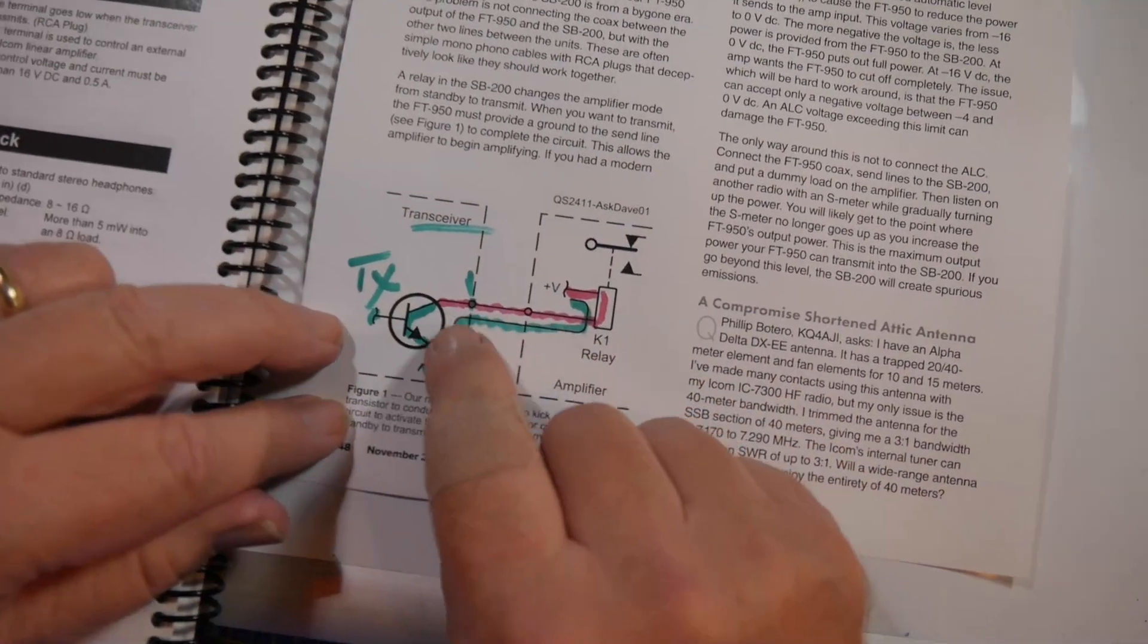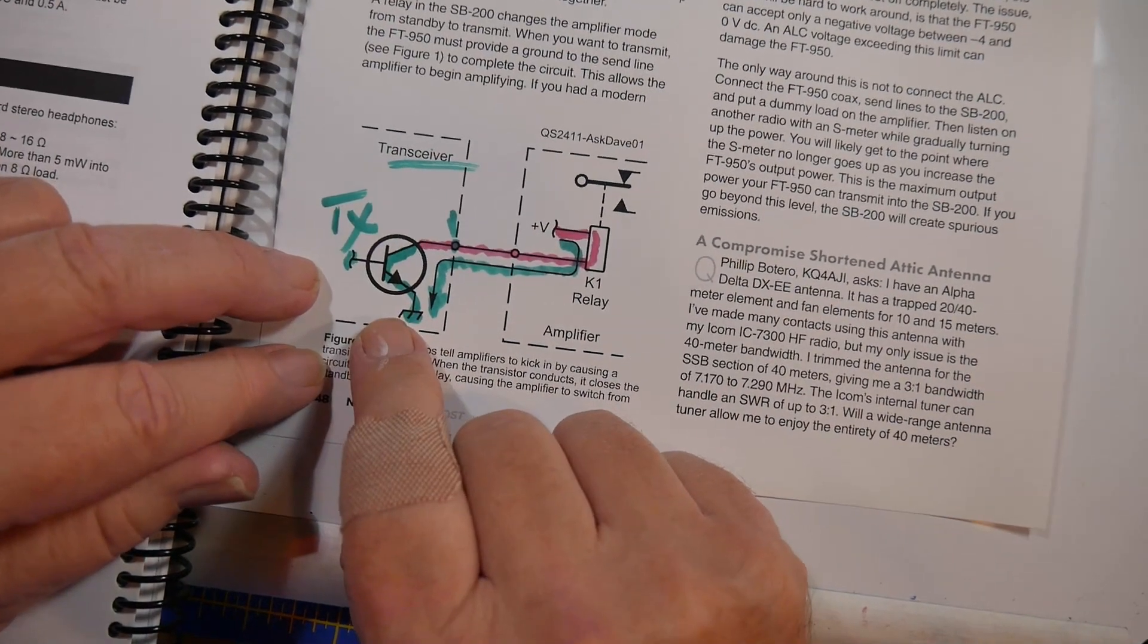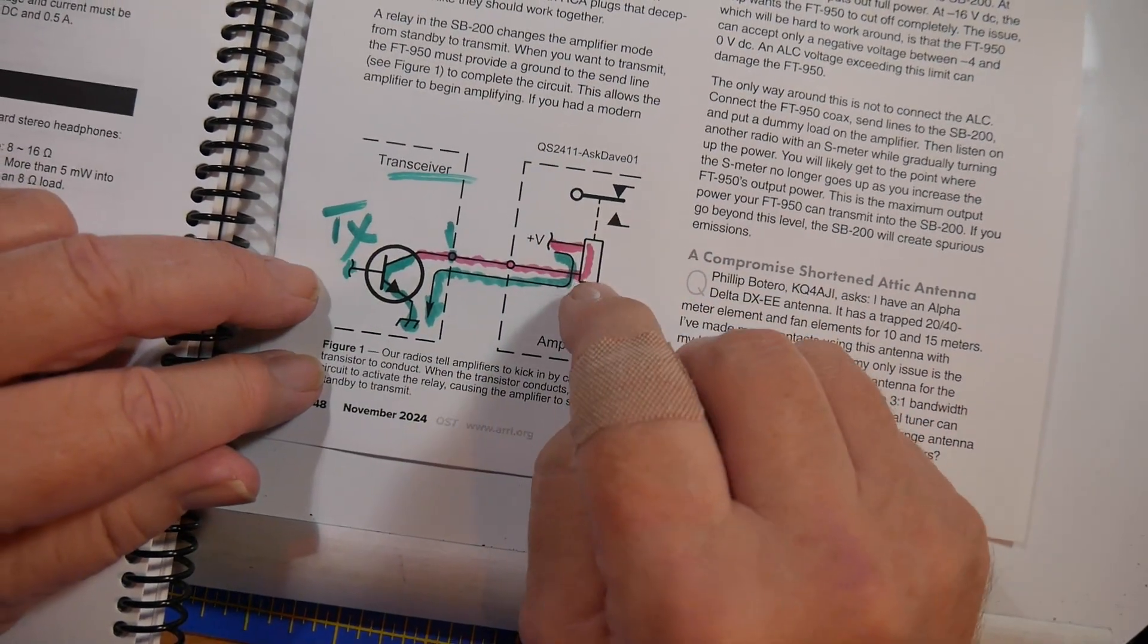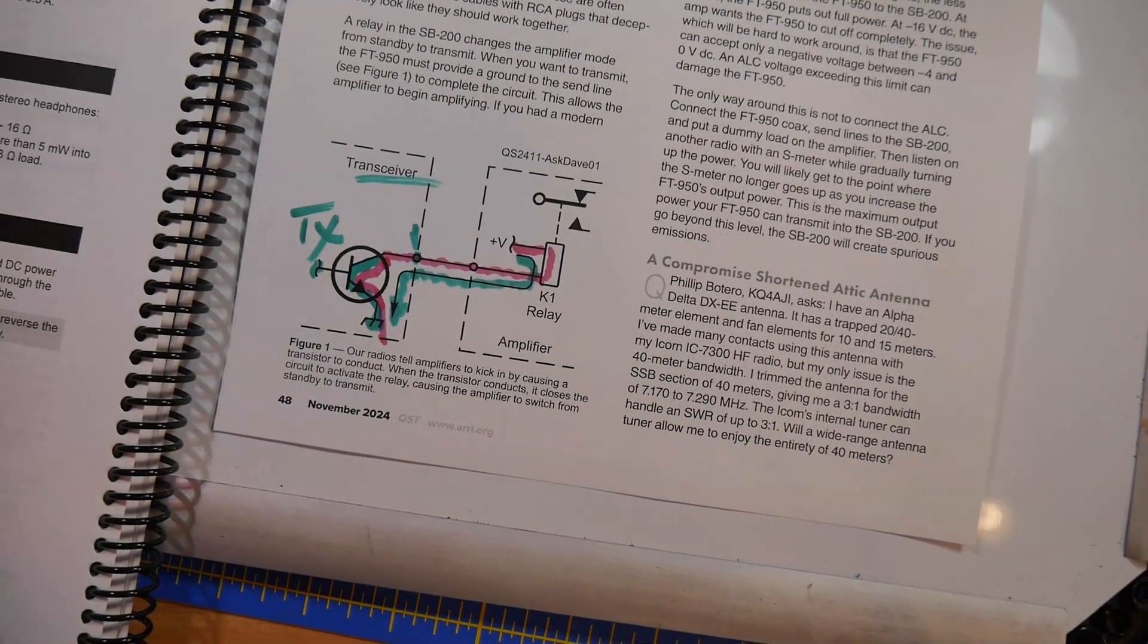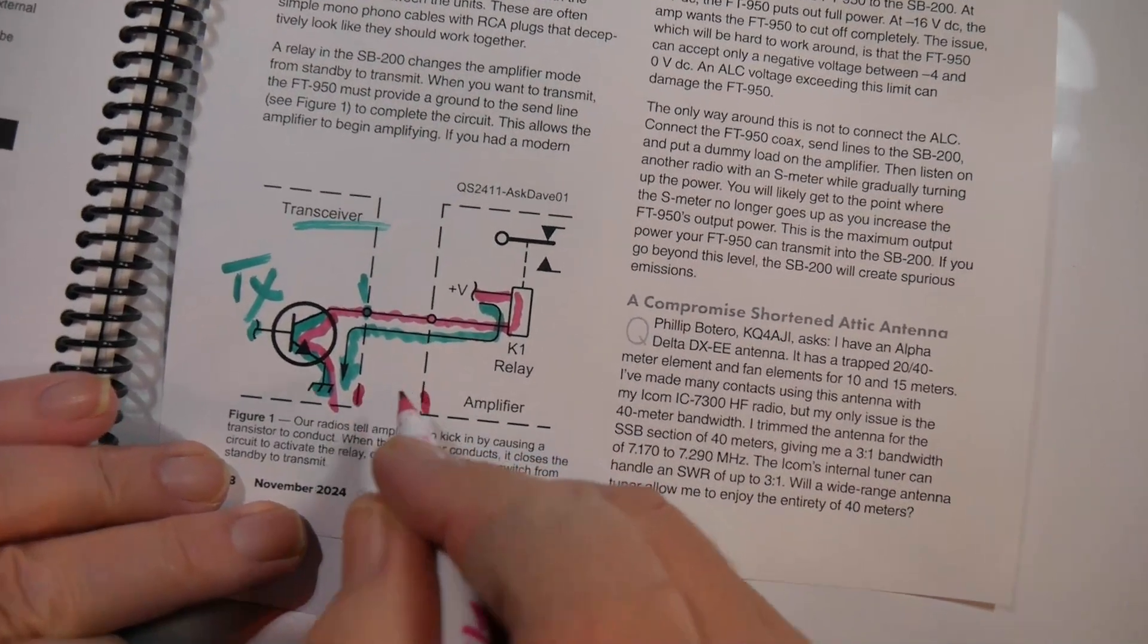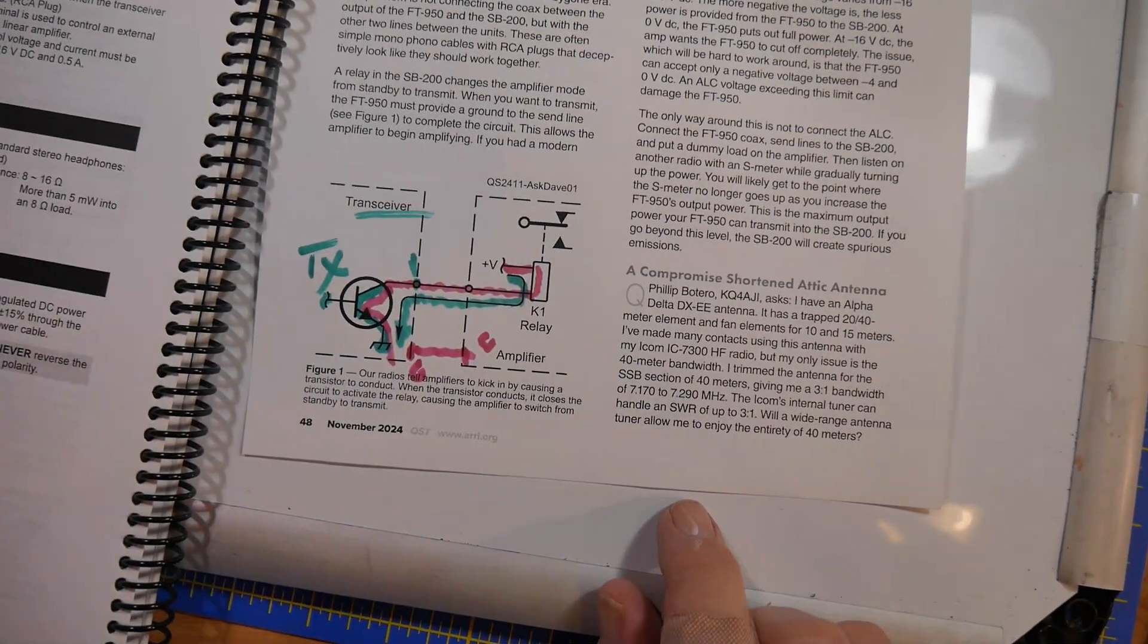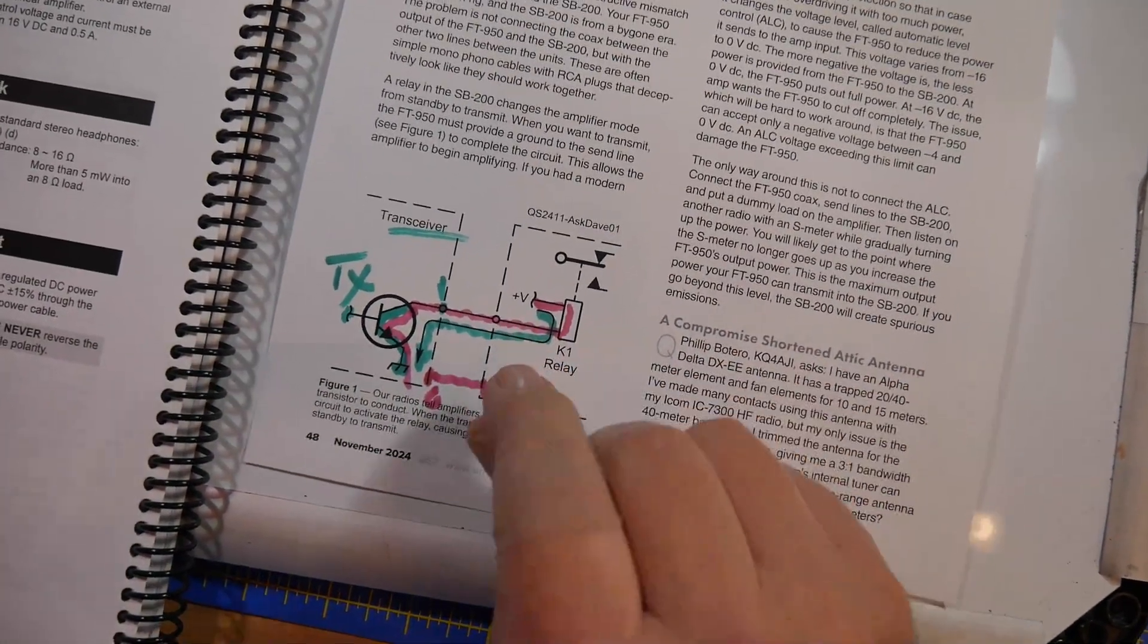So here's the current flow. It flows from in here down to in here. The actual circuits, the one in pink, goes down to the chassis. Now this and this are grounded to each other. That's the return path for the current. So that's what's going on right here.